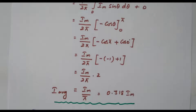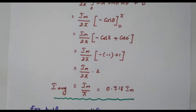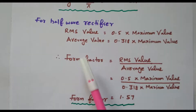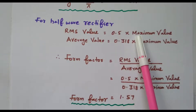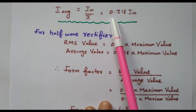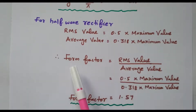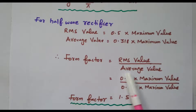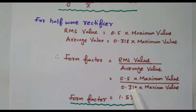Now we have both the average value and RMS value of the half wave rectifier, from which we can find the form factor. The form factor = RMS value / average value. The RMS value is 0.5·Im and the average value is 0.318·Im. The Im cancels, giving 0.5 / 0.318 = 1.57. So the form factor for the half wave rectifier is 1.57.